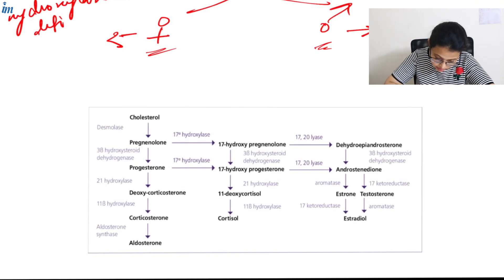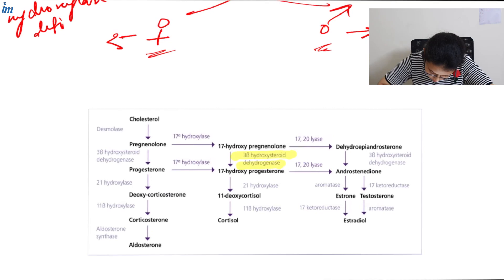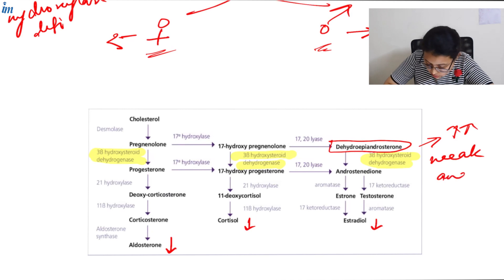The last enzyme deficiency is 3-beta-hydroxysteroid dehydrogenase. In this enzyme deficiency, we have low levels of all three steroids—aldosterone, cortisol, and testosterone. We just have dehydroepiandrosterone in large quantity, and this is a weak androgen.